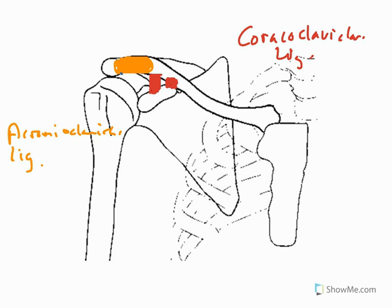And then the last but not least one comes from the acromial process here down to the coracoid process. And this one will be a coracoacromial ligament. So it does help to sit and draw these structures in.